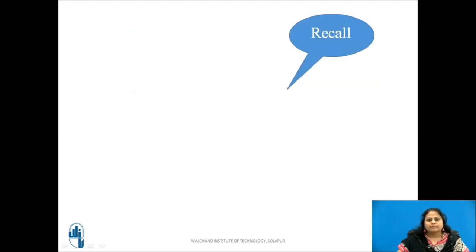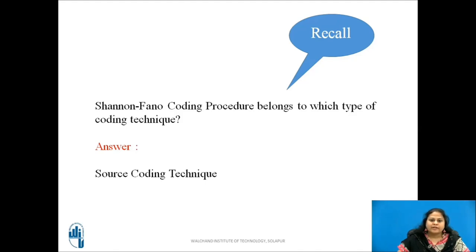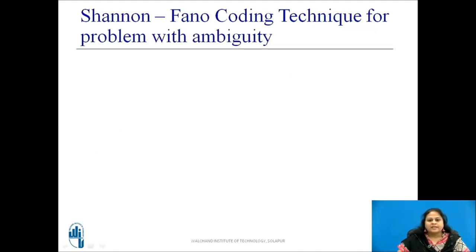These are the contents of this session. In the previous session, we studied types of coding techniques and how to encode a message ensemble using Shannon-Fano coding techniques. Before moving ahead, recall to which coding technique Shannon-Fano coding technique belongs. The answer is source coding technique. In the previous session, we saw how Shannon-Fano coding technique is applied to find the code words and the efficiency of a system. In that case, we had no confusion in partitioning the messages. But this is not the case all the time. Sometimes there exists an ambiguity in selecting the position for partitioning the messages. How to deal with such problems with ambiguity is now discussed.